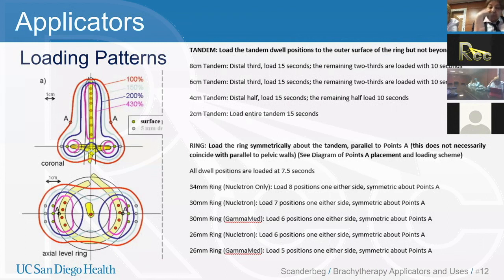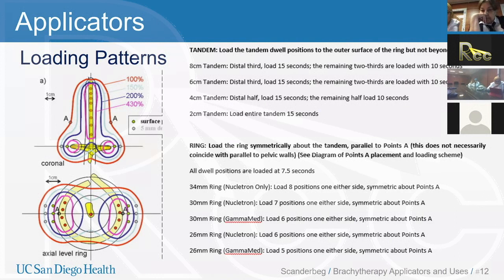By starting with those ratios, you keep the ratio intact, but it normalizes depending on your source activity so that you get your prescription dose at point A. For the ring, we load all active positions with 7.5 seconds, symmetric about point A. For a 34-millimeter Nucletron ring, we load 8 positions on either side; for a 30-millimeter Nucletron ring, 7 dwell positions on either side; for a 26-millimeter ring, 6 dwell positions on either side; and for a Varian 30-millimeter ring, 6 dwell positions on either side.